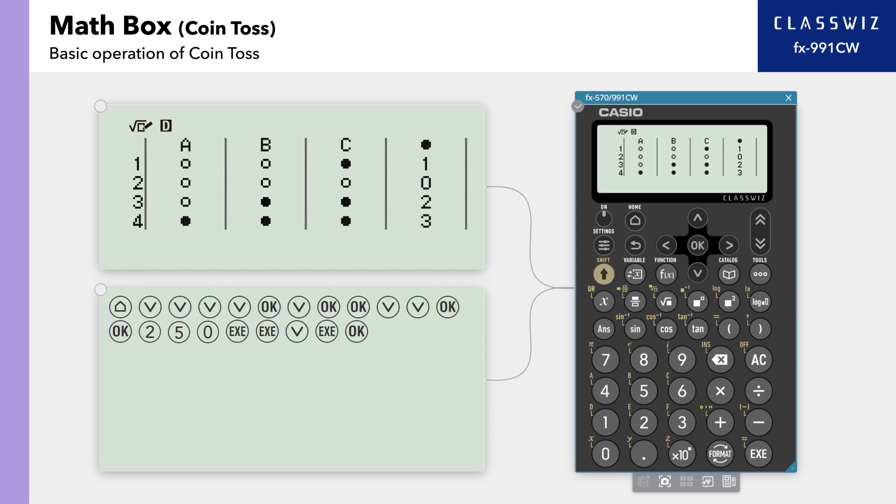This screen shows the coins A, B, C, and if they landed heads or tails for each toss. Black circles are heads, and white circles are tails. The rightmost column shows the total number of heads for each throw. You can scroll down to see the rest of the tosses.